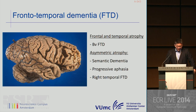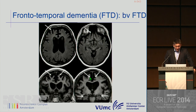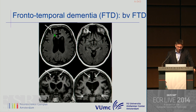Another disease is FTD. Frontotemporal dementia includes a very heterogeneous group of patients, including the behavioral variant of FTD with frontal and temporal atrophy. Asymmetric atrophy can be observed in semantic dementia patients and progressive aphasia patients, particularly in the left temporal lobe. There is also another variant with atrophy of the right temporal lobe, named the right temporal variant of FTD. In the behavioral variant, you can see pronounced atrophy of both frontal lobes, particularly in the mesofrontal and basal frontal areas, while the medial temporal lobe is relatively spared.